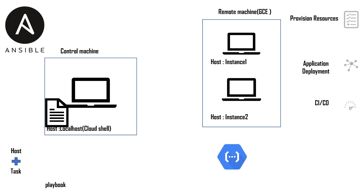Now that your resources are provisioned, let's deploy an application. To do that the first thing you need is an inventory, which consists of all the resources on which you want to deploy your application. Your inventory is created after provisioning resources — so it would consist of hosts like instance one and instance two. To deploy the application, you create another playbook where the host represents instance one and instance two, and the task would be to install a web server on those instances.